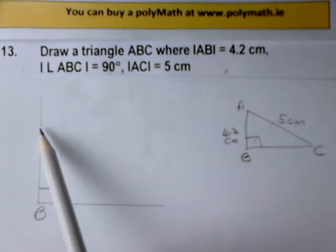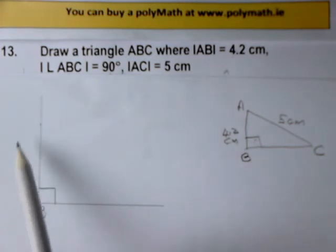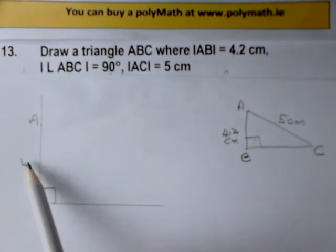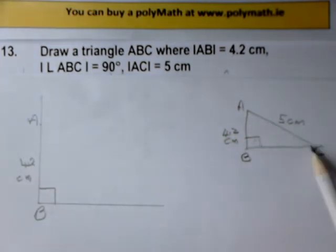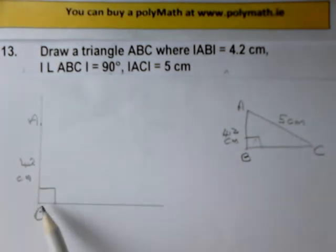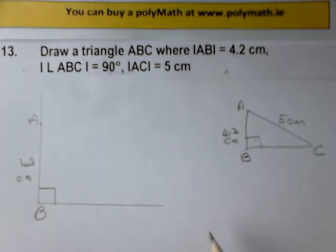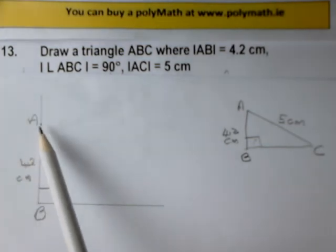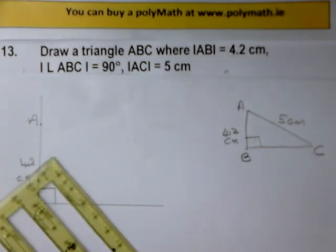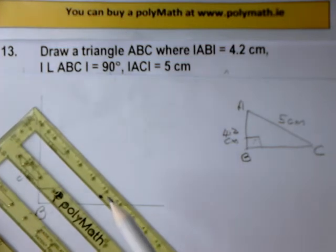That dot there is A, and that's 4.2 centimeters. Now the distance from A to C — the hypotenuse — is 5 centimeters. So from here down to somewhere on this line, which I don't know yet, is 5 centimeters. So I'm going to draw an arc with center A and radius 5 centimeters, putting the zero hole of the compass over A.